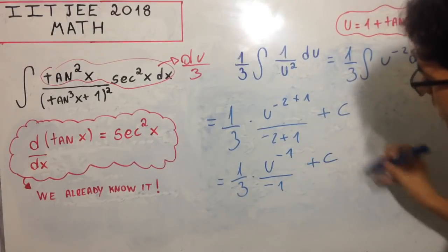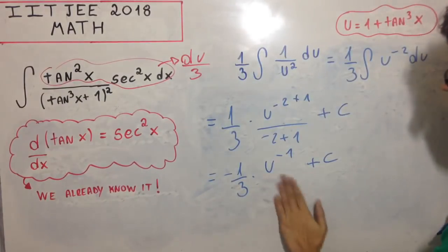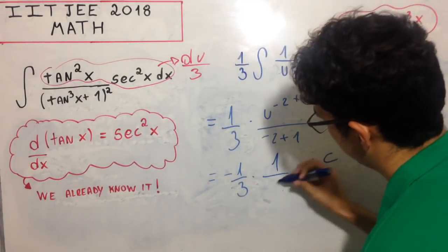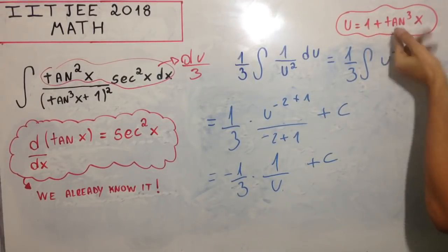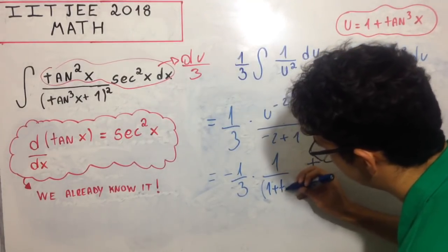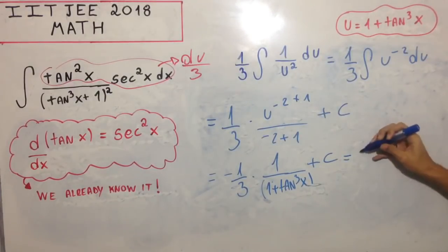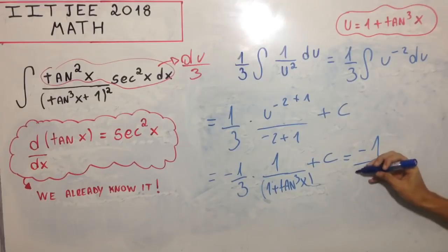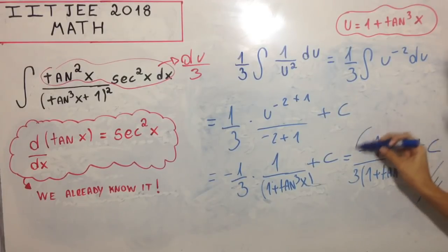This simplifies to -1/u plus C. We know that u equals 1 + tan³x, so we have -1/(3(1 + tan³x)) plus C, and this is our answer.